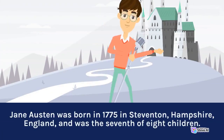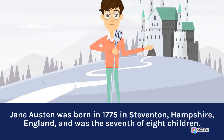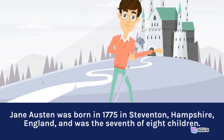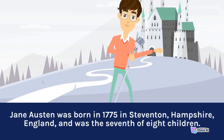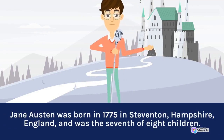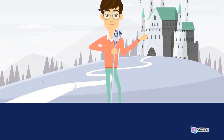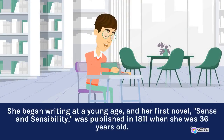Jane Austen was born in 1775 in Steventon, Hampshire, England, and was the seventh of eight children. She began writing at a young age, and her first novel, Sense and Sensibility, was published in 1811 when she was 36 years old.